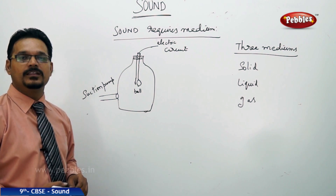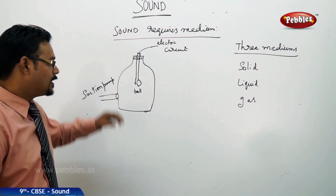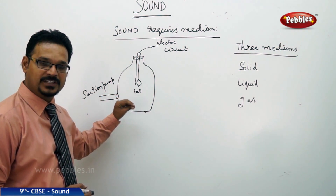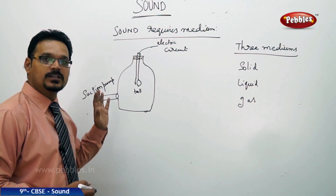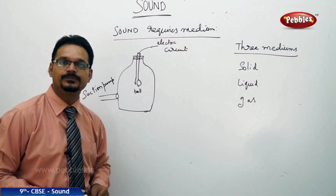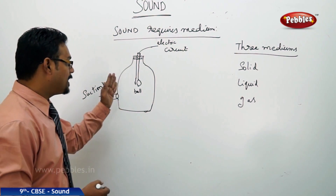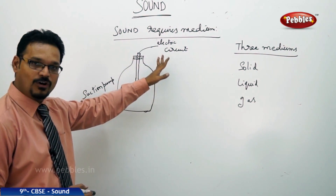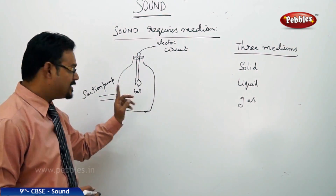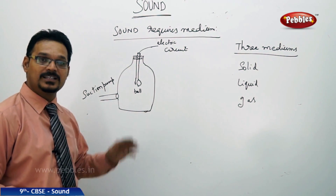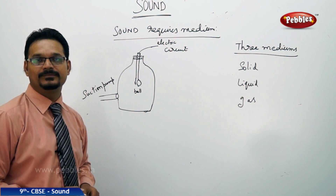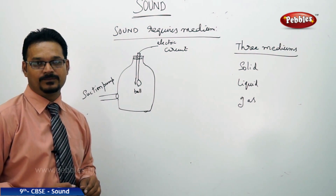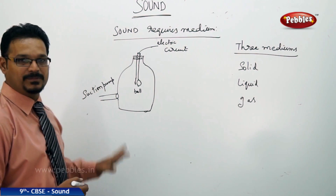In the second step, using the suction pump, we slowly suck the air out of the jar. If you observe carefully, the intensity of the sound decreases gradually. At one point you stop hearing the bell — but the electric circuit is still on and the bell is still ringing; you can see its vibration, but you can't hear it. This is because there is no air in the jar.